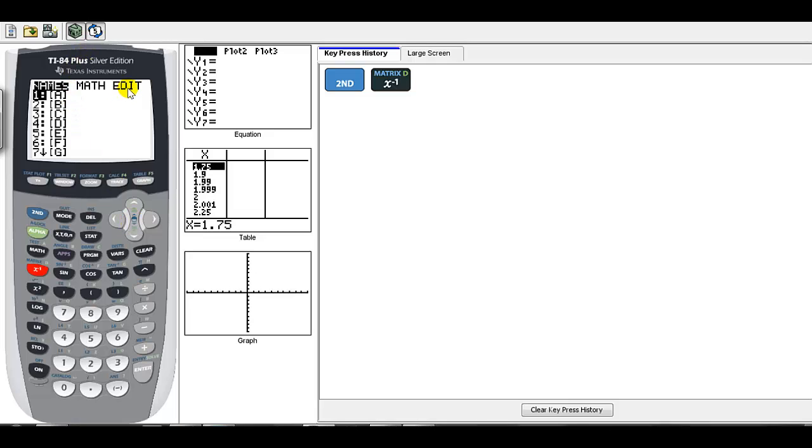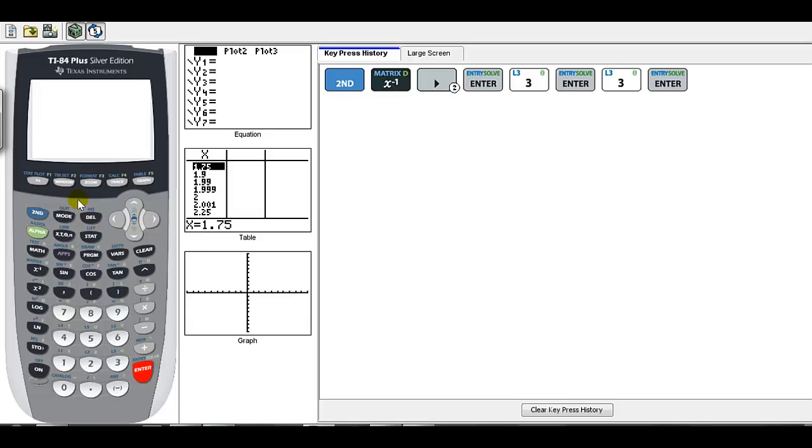Arrow over to edit because we need to edit these matrices. Edit matrix A. Put in its dimensions - it's a 3 by 3 matrix. Make sure below it looks like what we have. Now enter the values, and when you press enter it moves to the right. Use the negative sign, not the minus sign.